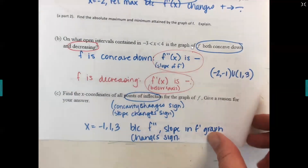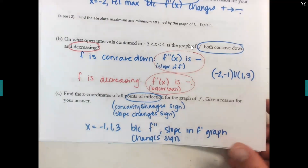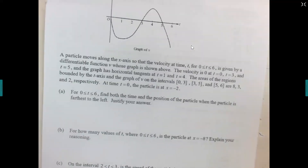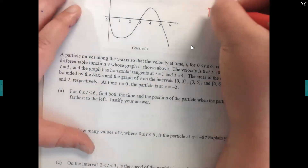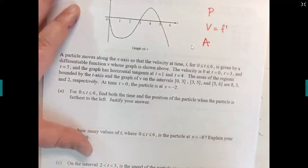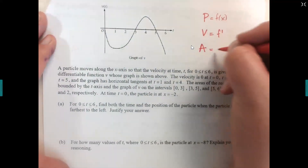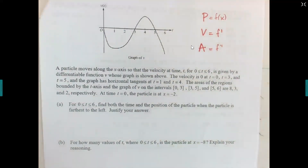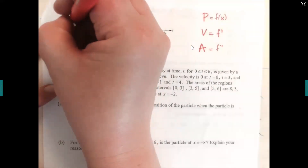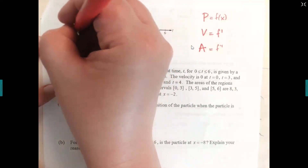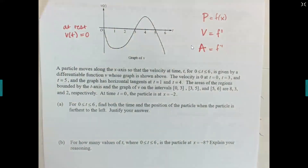Now we're applying particle motion. Instead of a graph of f prime, we have a graph of velocity. Keep in mind the sequence: position, velocity, and acceleration. Velocity is essentially an f prime graph, position is the original f of x, and acceleration is f double prime. The question says to find the time and position of the particle when it's farthest to the left, so first find critical numbers — where the graph is at rest, meaning velocity equals zero.